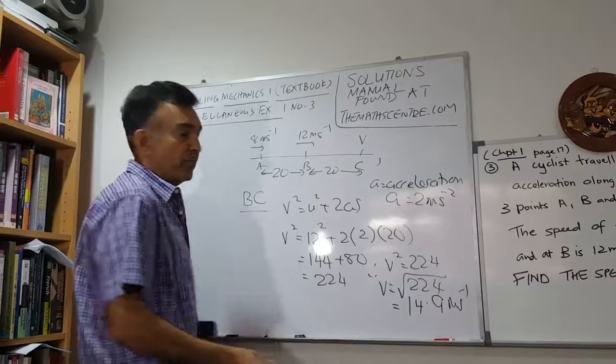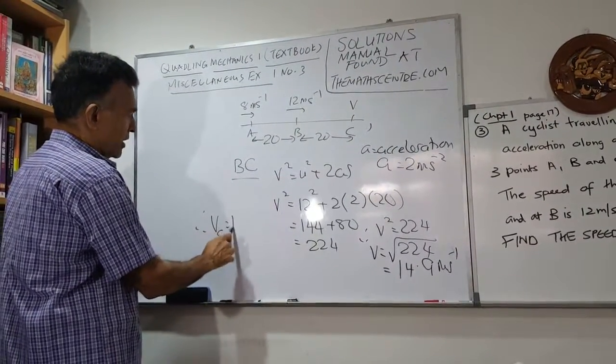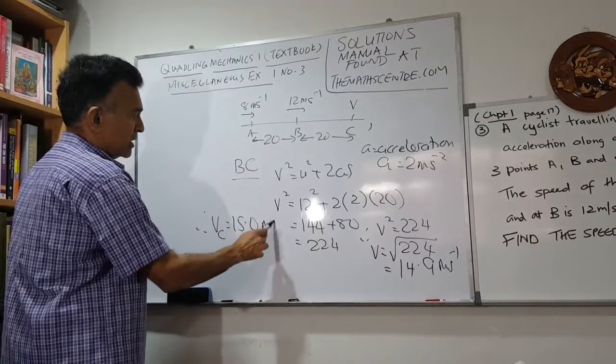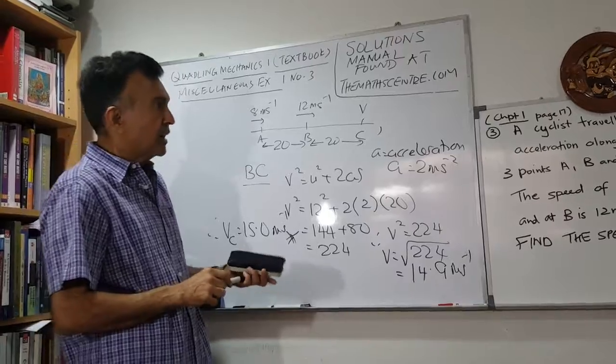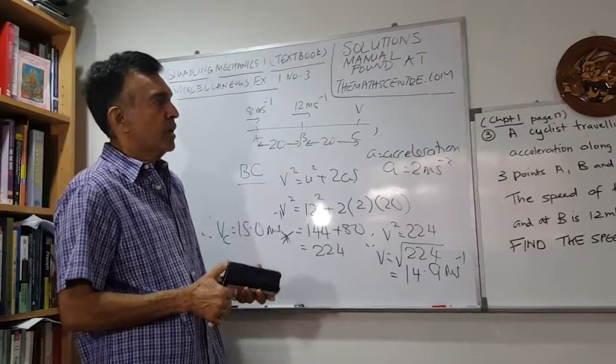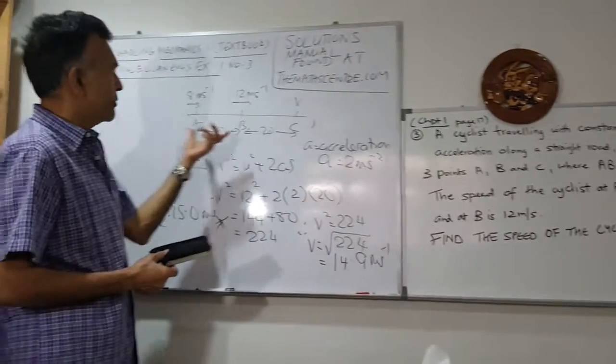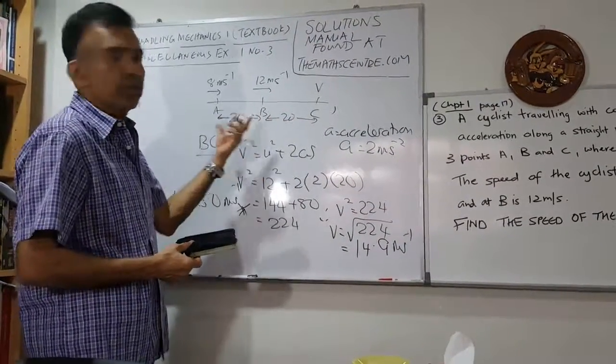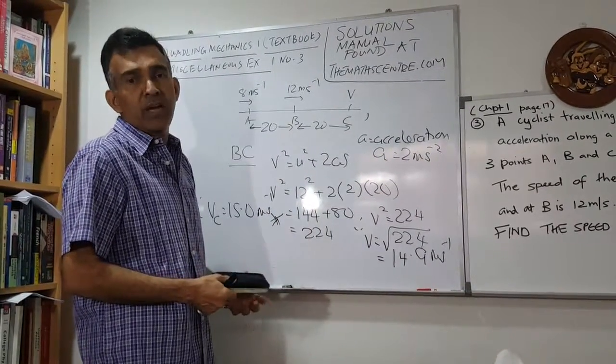Therefore, v at C is 15 meters per second, and we're done. The main things in this question: we're dealing with constant acceleration formulas, two stretches AB and BC, using the formula, plugging in the numbers, and working out the answers.